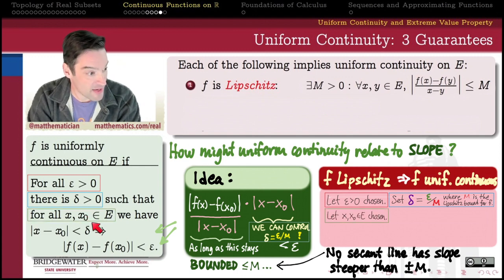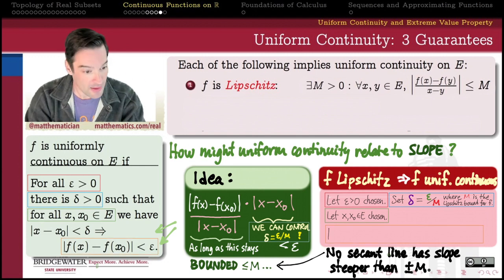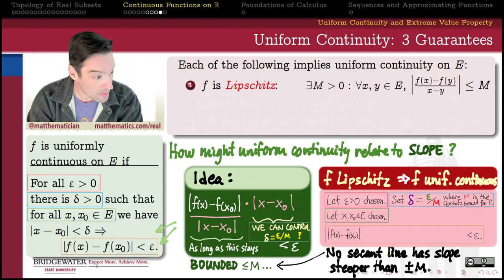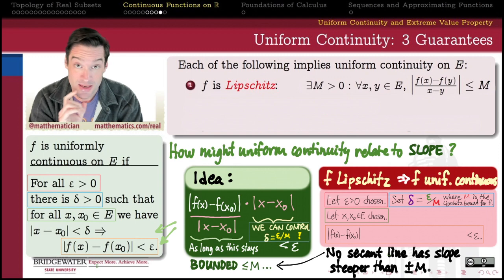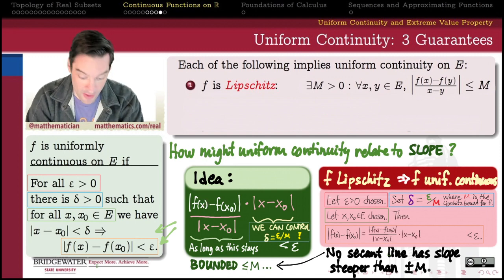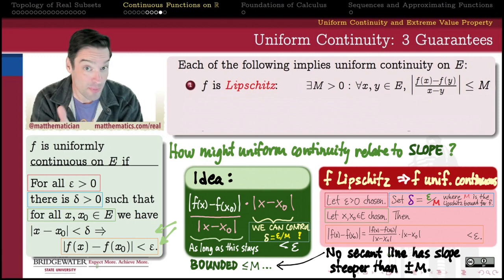The next ingredient is to choose x and x₀ arbitrarily from the domain such that they are delta-close: |x − x₀| < δ. We now need to show |f(x) − f(x₀)| < ε. We use the idea that the y-distance — the distance between the images of the two points — equals the secant slope multiplied by the horizontal distance, the run. Slope times run gives us rise. Now we'll use our ability to control each of these two factors.